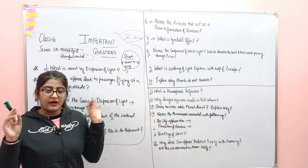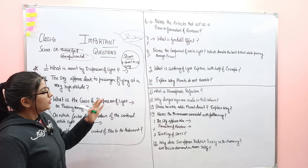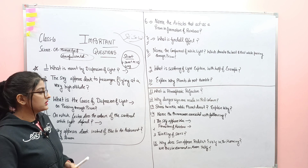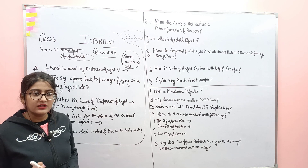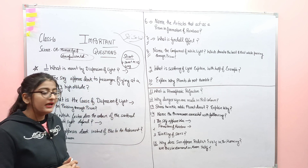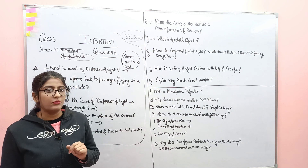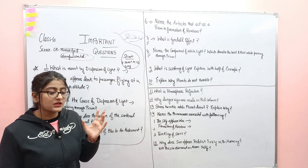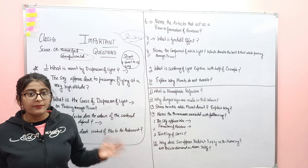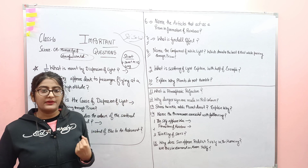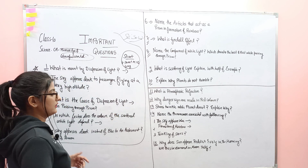A very favourite question of board examiners: why do planets not twinkle, and why do stars twinkle? These two questions can come in your exam, so prepare them. Next question: what is atmospheric refraction — even a one or two line answer is enough. Next question: why are danger signs made in red colour? These concept-based questions — about astronauts, the reddish sun early in the morning — are what will come in your exam rather than directly asking what refraction is. Next question: stars twinkle but planets do not — explain why. This planet question is a board examiner favourite.